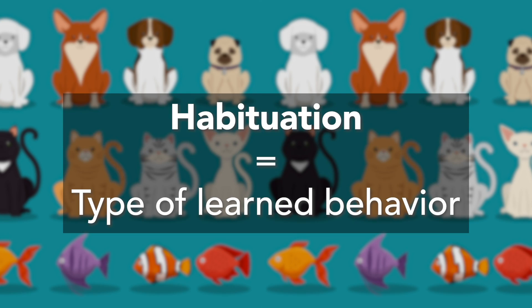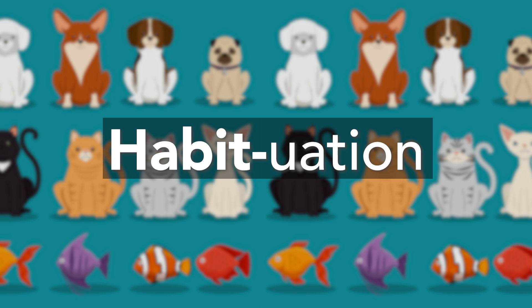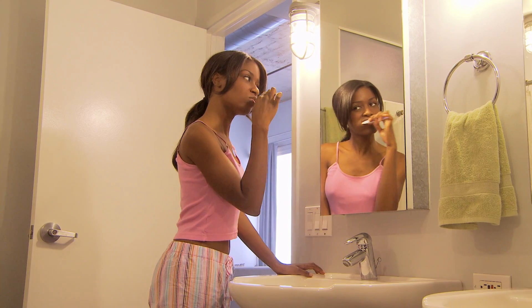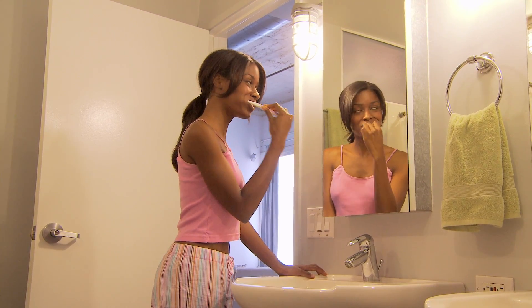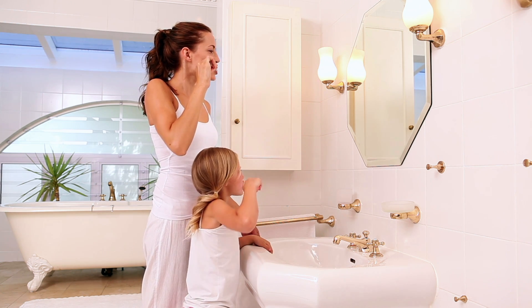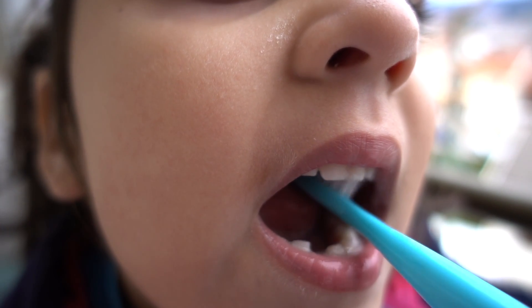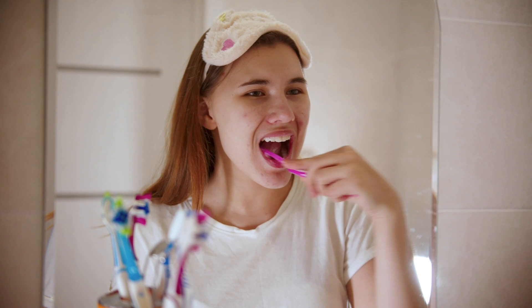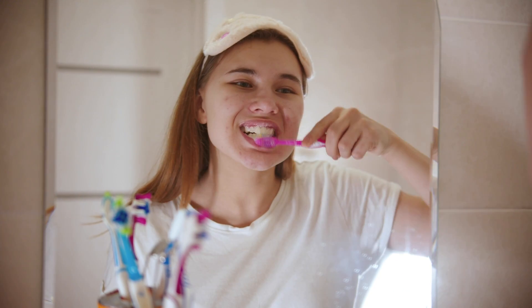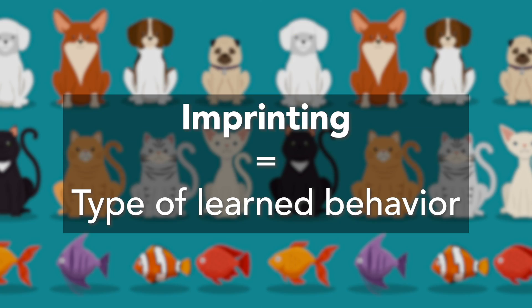That's why speaking is a learned behavior — someone has to teach young children how to do it. One type of learned behavior is called habituation, which means a behavior that becomes a habit. An example is how you learn to brush your teeth. Eventually brushing your teeth became a habit, and you no longer need praise to perform that learned behavior.